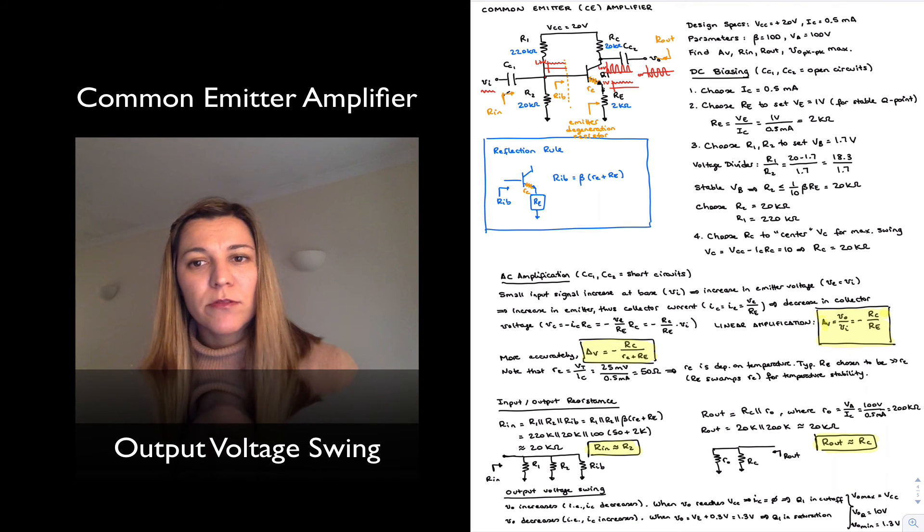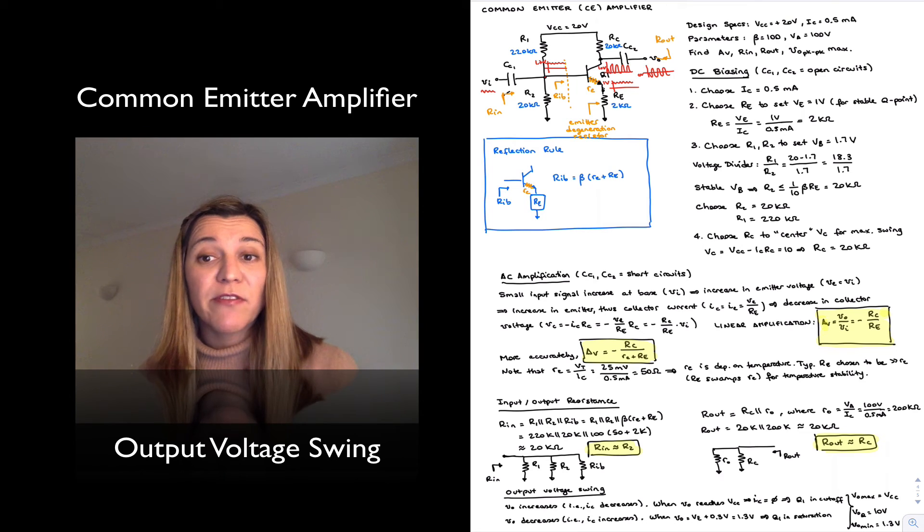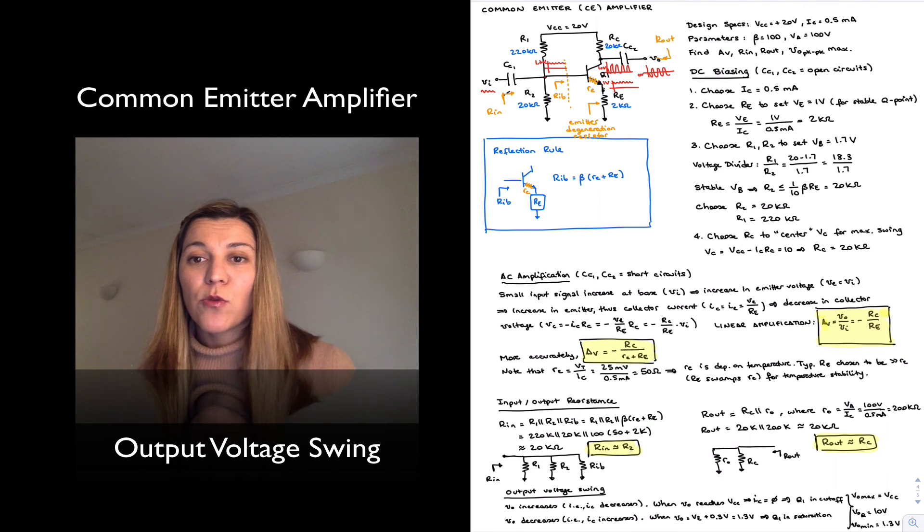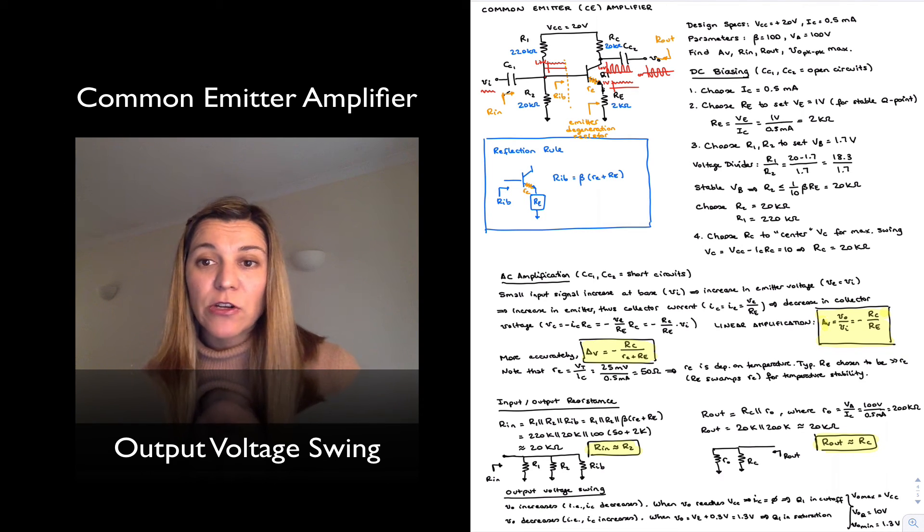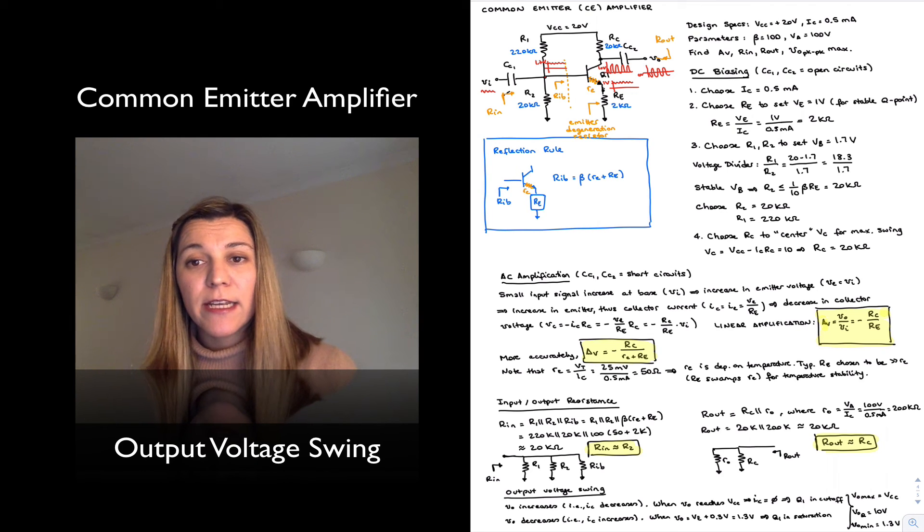Normally, when describing the amplifier in general and talking about its signal swing, we will go by the worst-case scenario. In this case, we could say the amplifier has a signal swing of 8.7 volts, which is slightly smaller in the negative direction than in the positive direction.